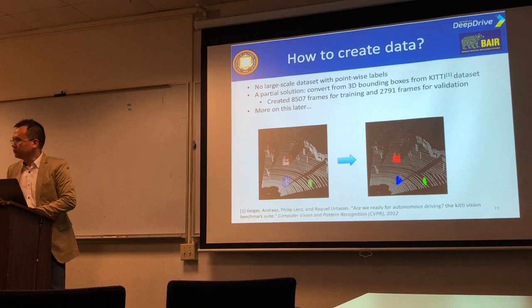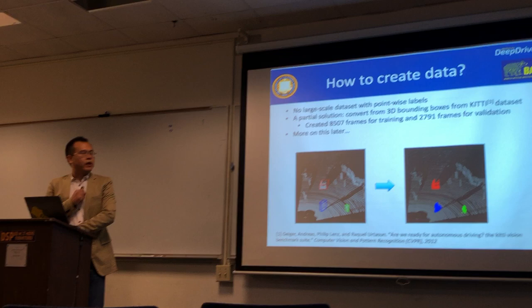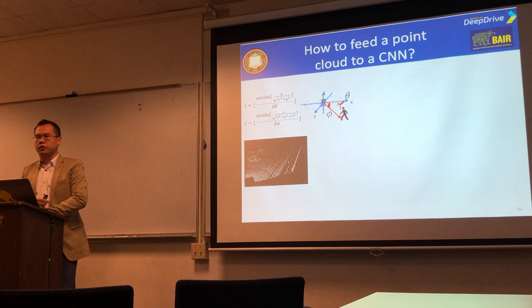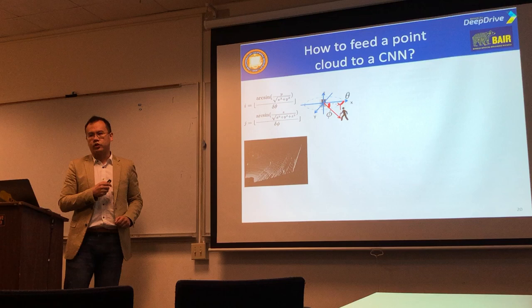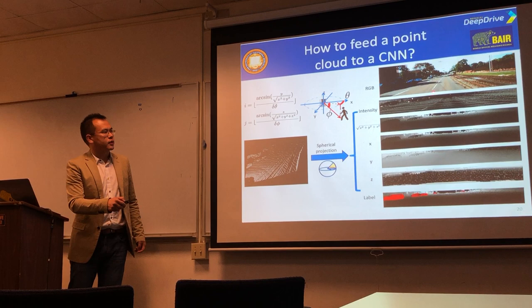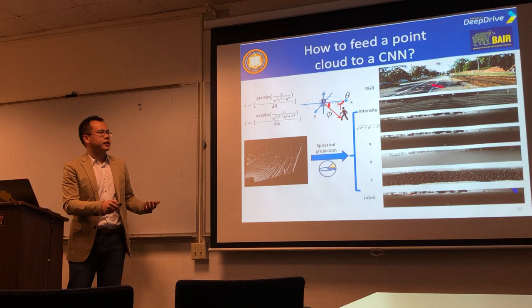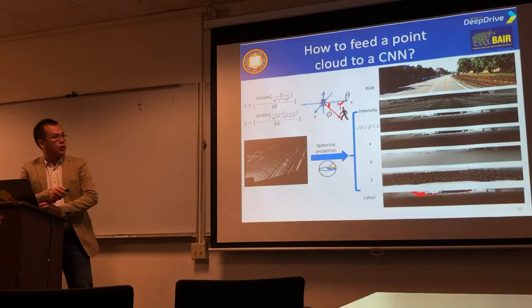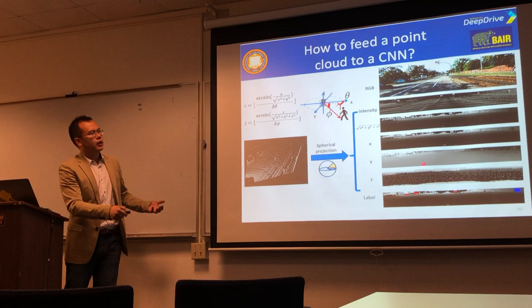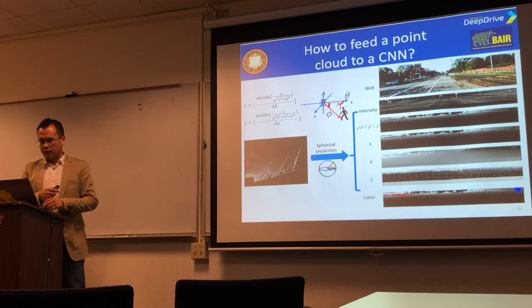For how to feed point cloud into a CNN — since the data is sparse and irregularly distributed — we perform a spherical projection. For each point, we compute the azimuth angle and the elevation angle, then use these two angles to denote the position on a 2D projected sphere. The value at each position, instead of RGB, is the intensity and XYZ measurement from LiDAR. This produces a dense, structured image we can feed into a neural network — essentially turning SqueezeNet into SqueezeSeg for LiDAR segmentation.